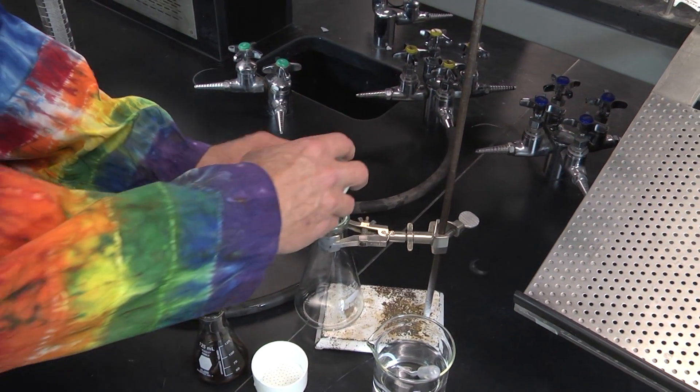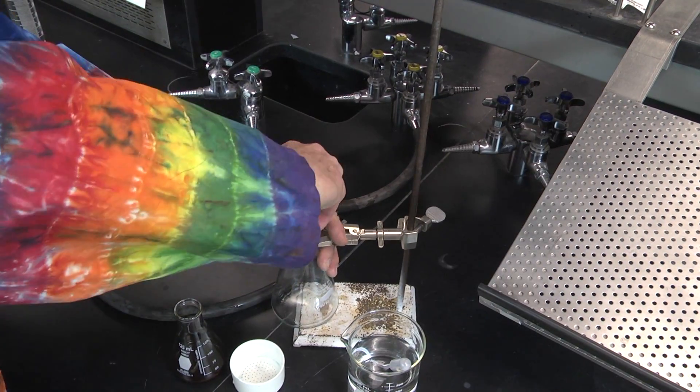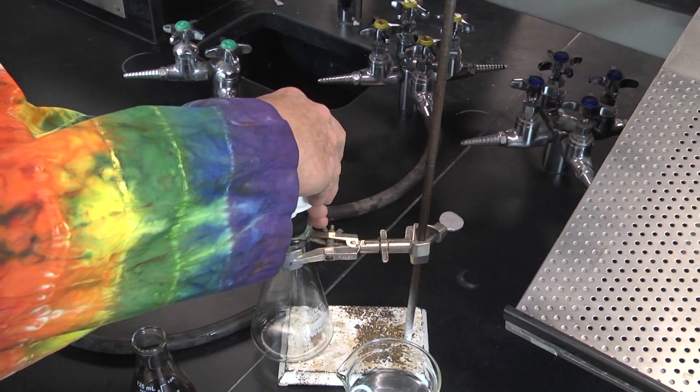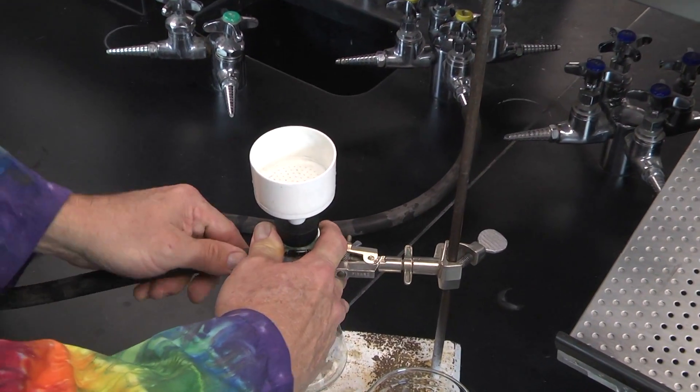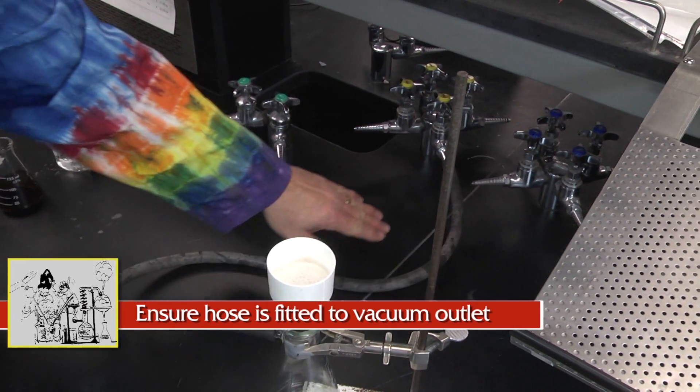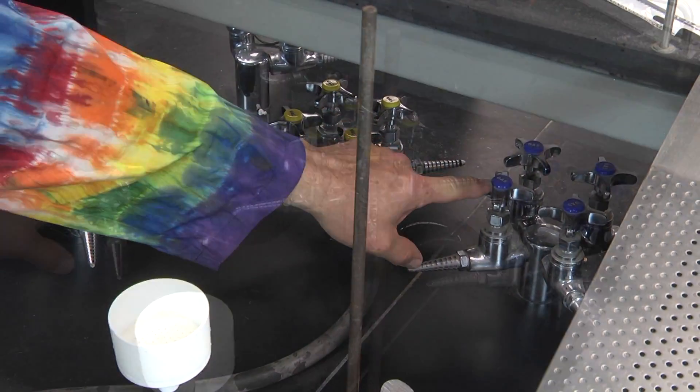Assemble a vacuum filtration apparatus. Secure the base of a Buchner funnel into the flask. Attach the top of the funnel. Attach the vacuum tubing to the sidearm flask and to the vacuum outlet. Take care to not attach the vacuum tubing to a water or a gas outlet.